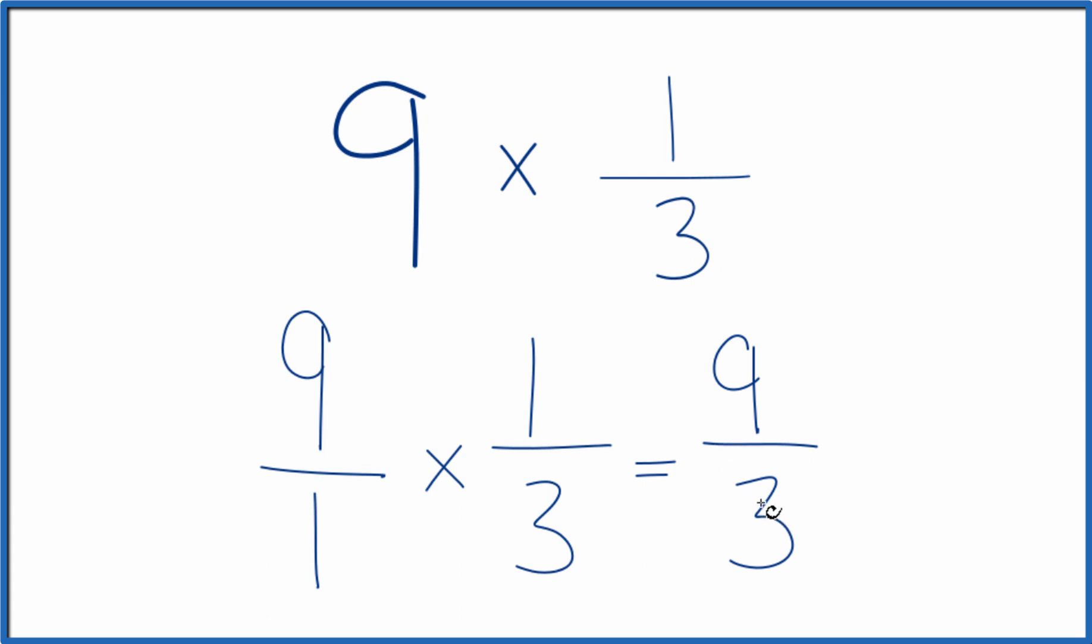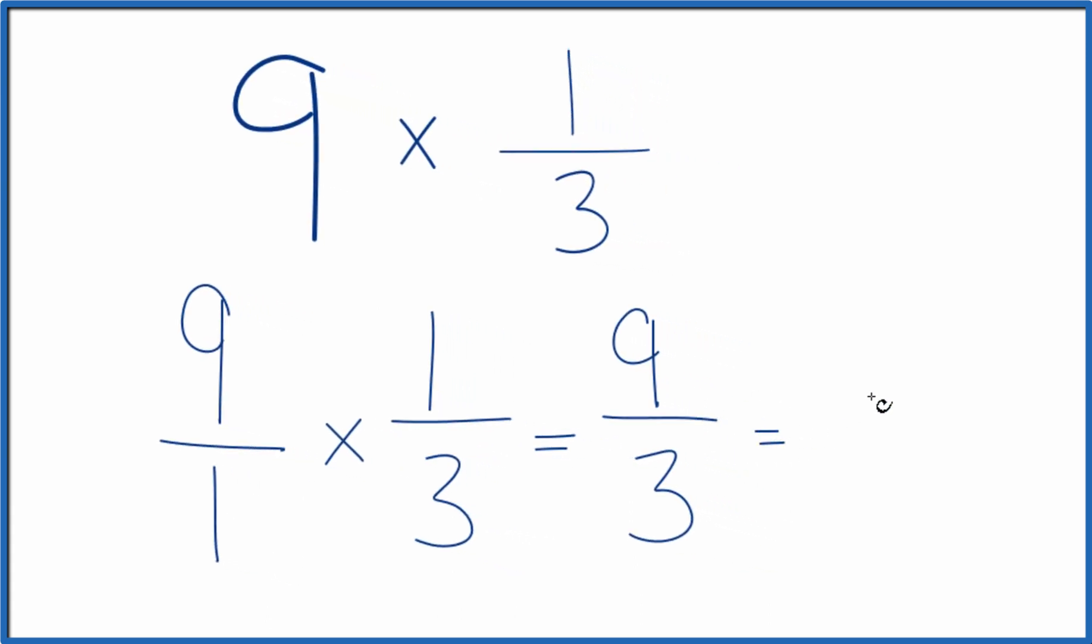But we can simplify this. 3 goes into 9 3 times. So in answer to our question 9 times 1 3rd, that just equals 3.